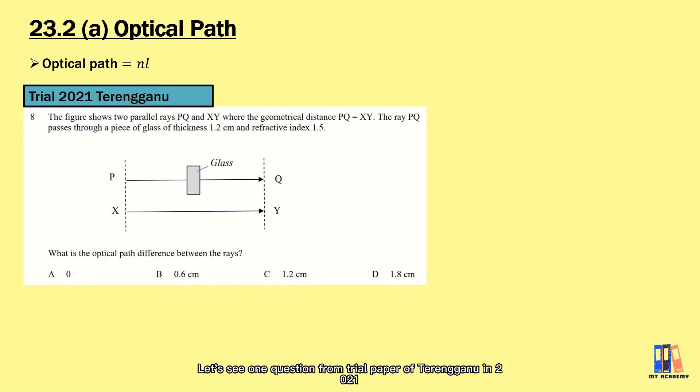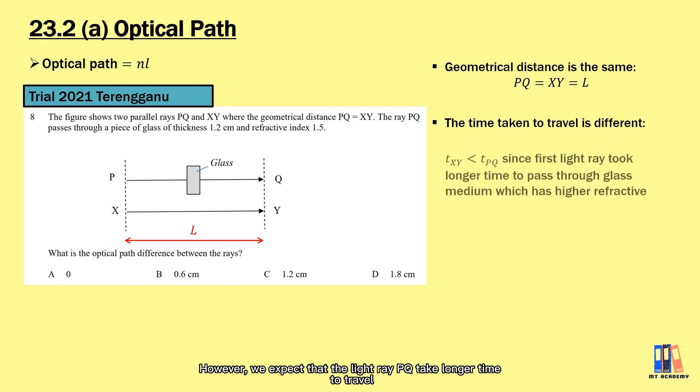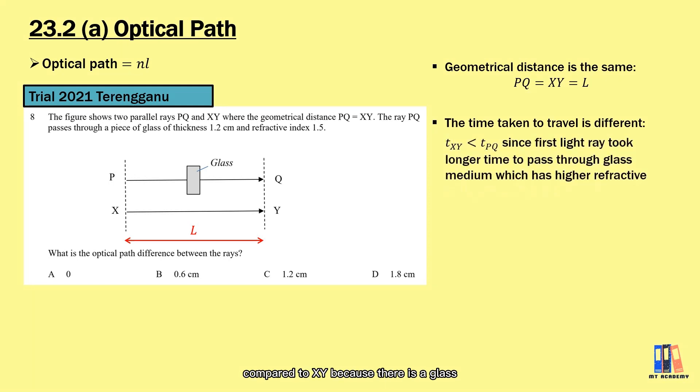Let's see one question from the trial paper of Terengganu in 2021, where two parallel light rays travel in paths PQ and XY. For PQ, we can see a piece of glass with thickness of 1.2 cm and refractive index of 1.5. Let us label the length of PQ and XY with L. First, the geometrical distance is equal for PQ and XY. However, we expect that the light ray PQ takes longer time to travel compared to XY because there is glass which slows down the light ray. To explain this, optical path is introduced.